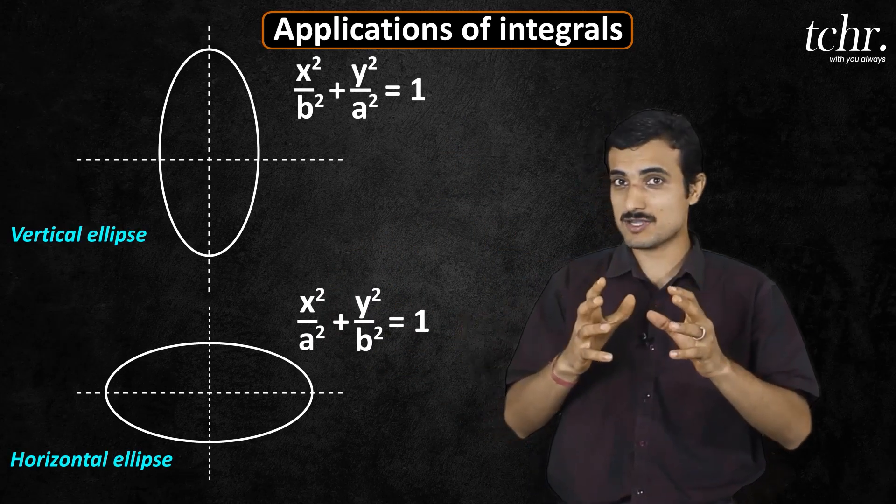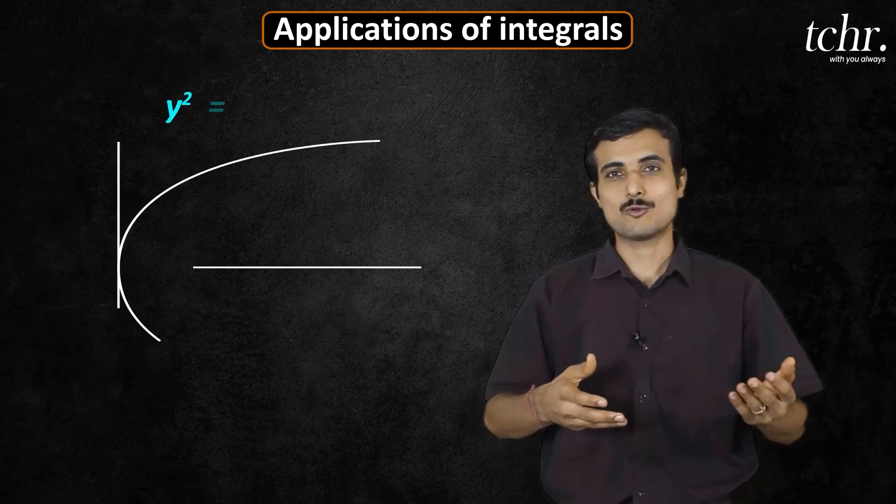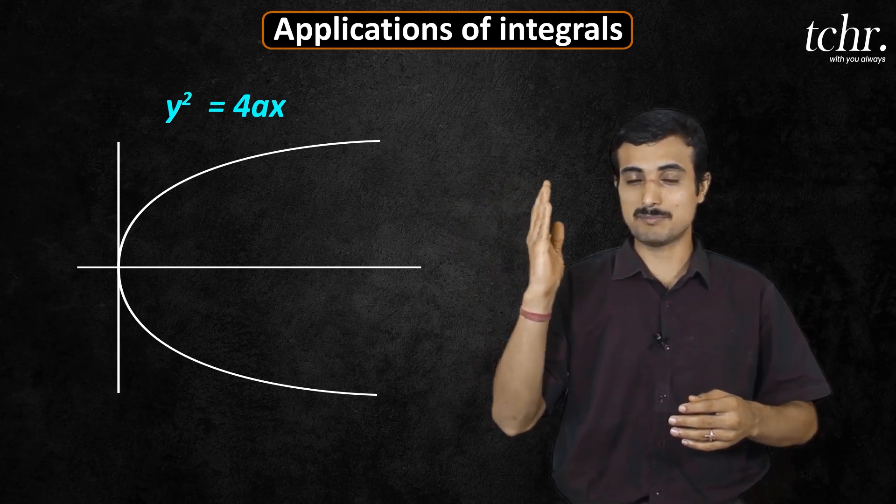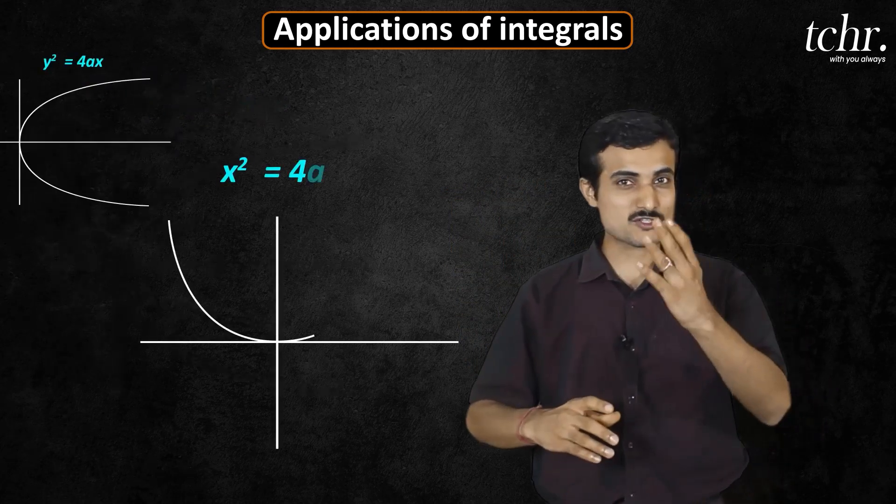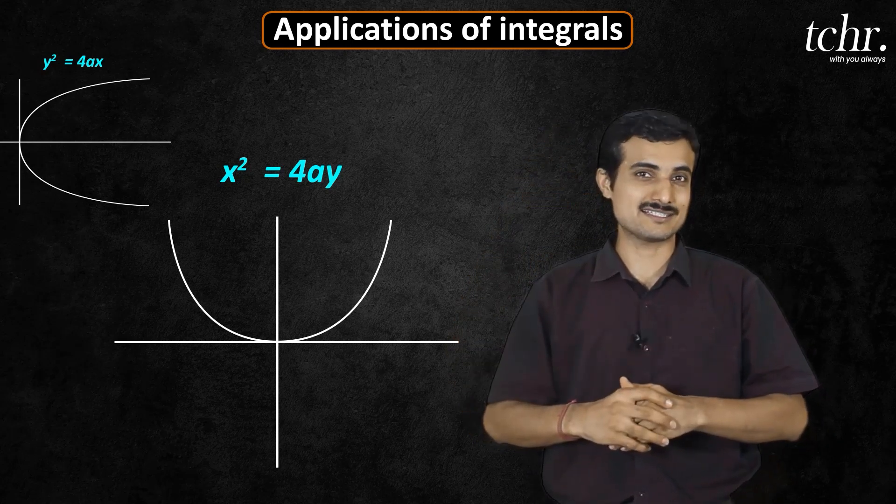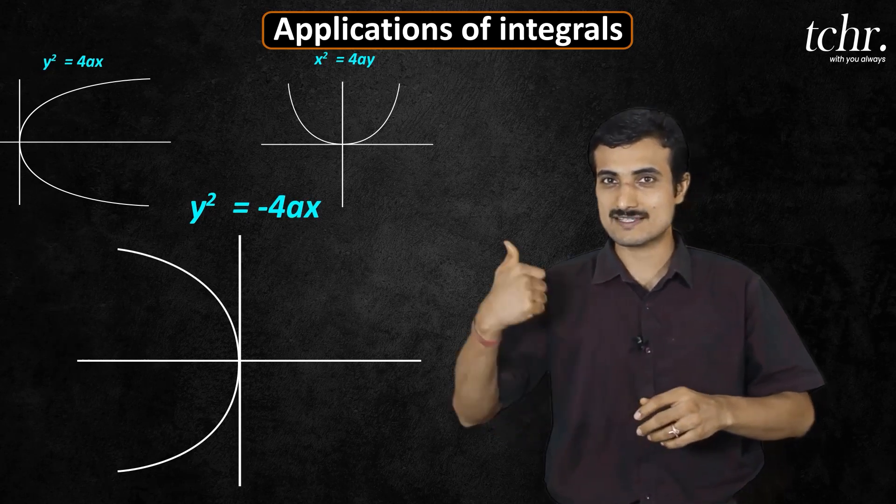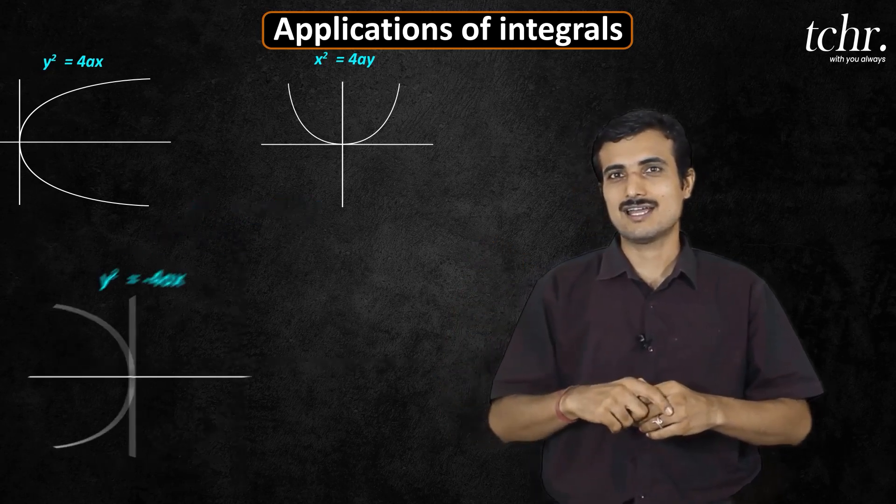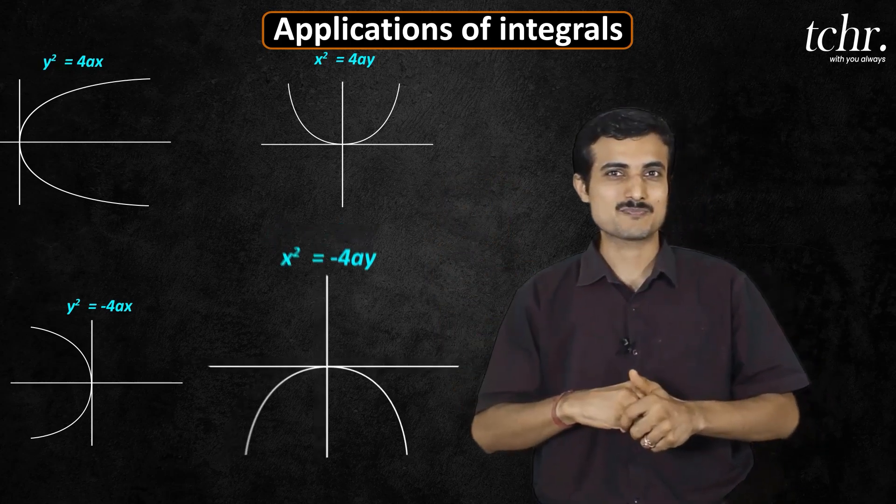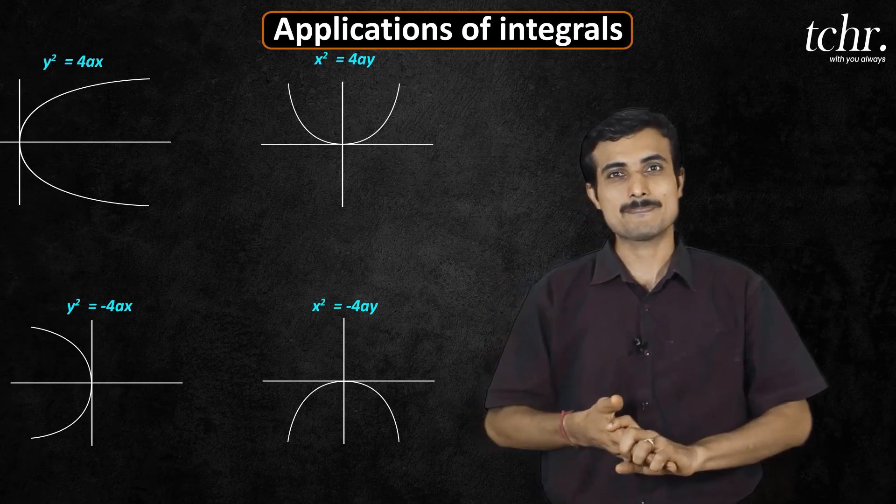Similarly, in case of parabola: y square equal to 4ax, you have to find the balance. x square equal to 4ay, you have to find the balance. So y square equal to minus 4ax, left side, and x square equal to minus 4ay, downward direction. So this direction is going to be the correct diagram.